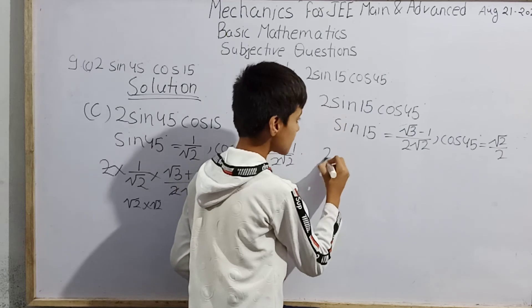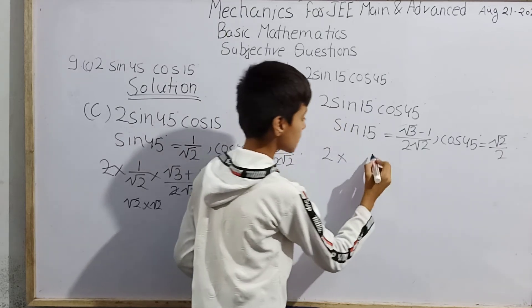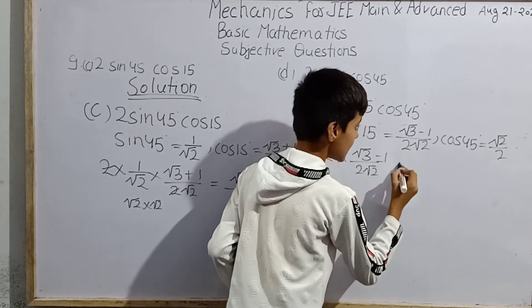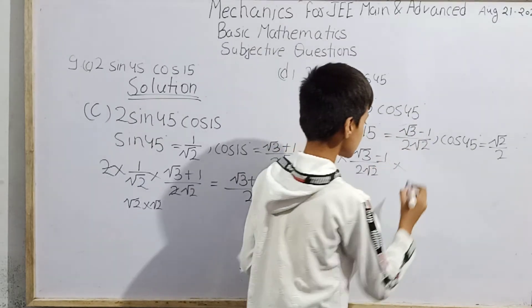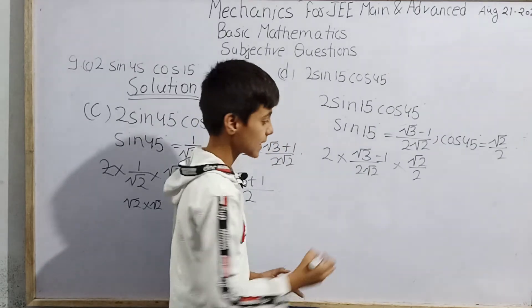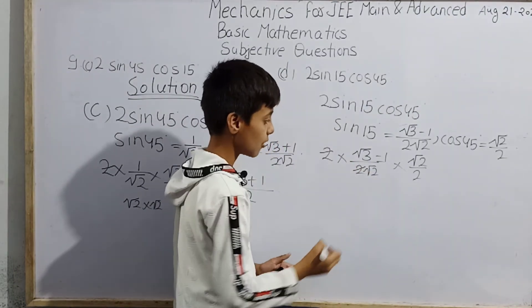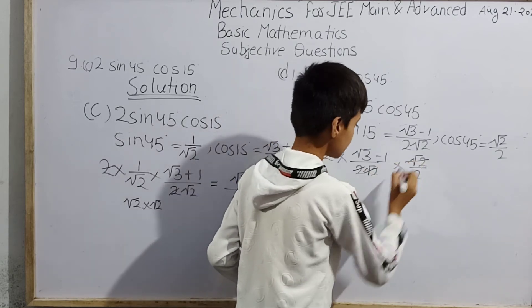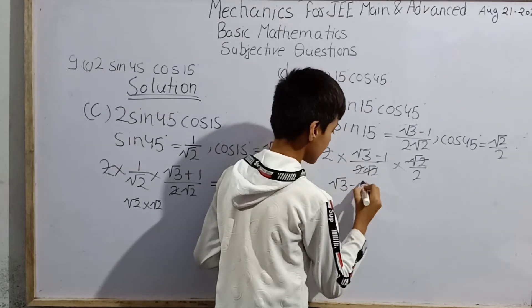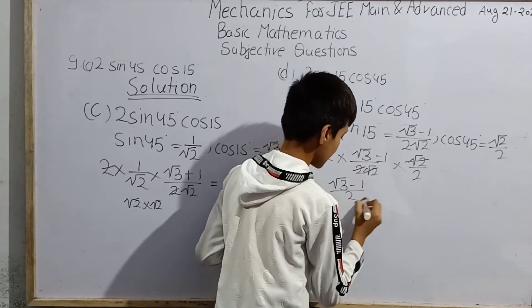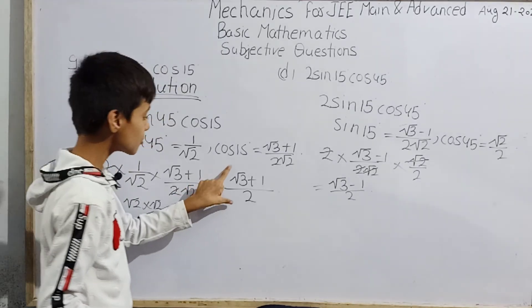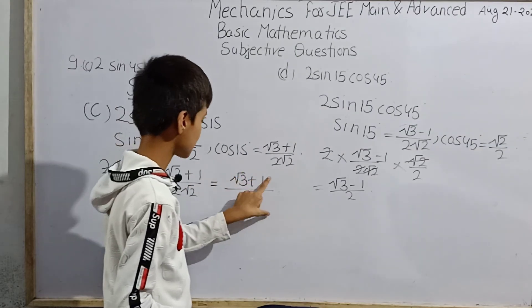So we write 2 × (√3 − 1)/(2√2) × (√2/2). The 2's cancel, and √2 cancels with √2, leaving (√3 − 1) × (1/2). So the answer for D is (√3 − 1)/2.